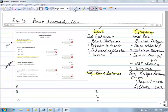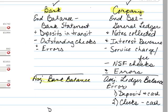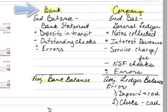For our bank reconciliation, we see that we've got a balance for our bank and we've got a balance for our company. Those two balances typically will be different, and it can be due to timing issues as we'll see with the bank, or it can be that there are items that have not been recorded yet for the company. I've separated these out between the bank side and our company side.